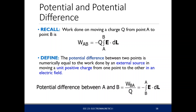Let's recall first that the work done when moving charge Q from point A to point B is this expression. The work from A to B is equal to negative of the charge times the line integral of your electric field dotted to your differential path from point A to point B.